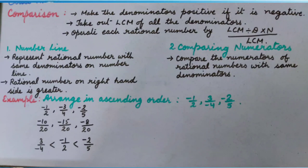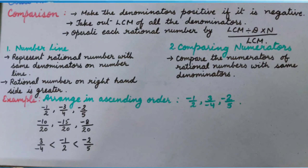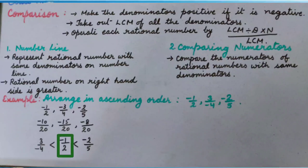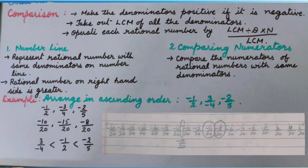We can see here that minus 15 upon 20 is the smallest rational number, so 3 upon minus 4 is smallest. Then minus 10 upon 20, that is minus 1 upon 2. And the greatest rational number is minus 8 upon 20, that is minus 2 upon 5.